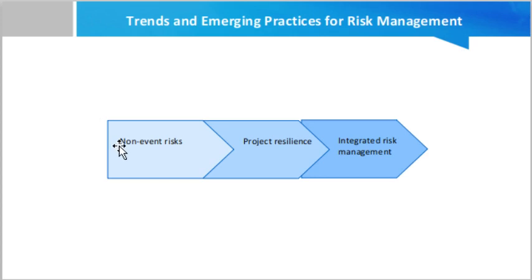Most projects focus only on risks that are uncertain future events that may or may not occur. Examples of event-based risk include: a key seller may go out of business during the project, the customer may change the requirement after design is complete, or a subcontractor may propose enhancements to the standard operating processes. There is increasing recognition that non-event risks need to be identified and managed. There are two main types of non-event risk.